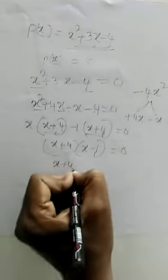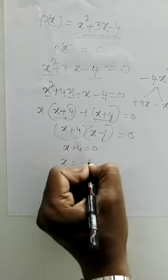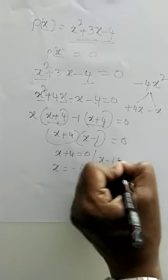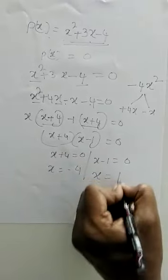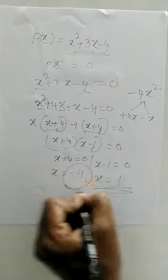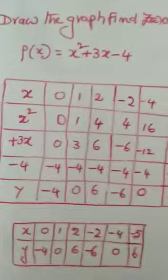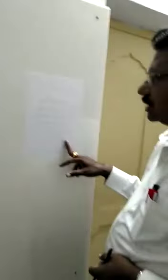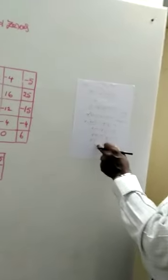So x plus 4 equals 0 gives x equals minus 4, and x minus 1 equals 0 gives x equals 1. These two values are the zeros of the given polynomial — you already learned this. The equation resolves to zeros at minus 4 and 1. Now we put these values on the table.